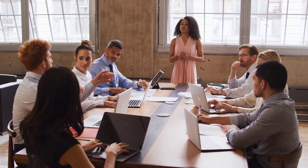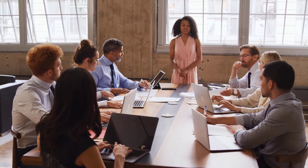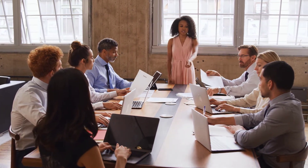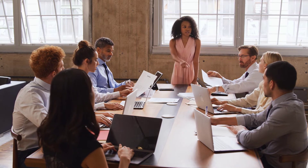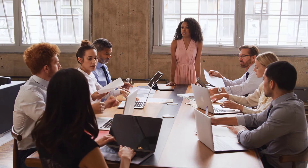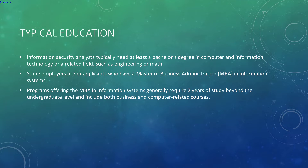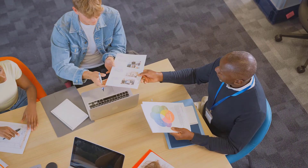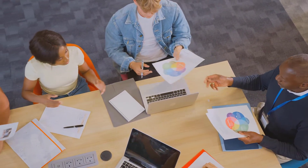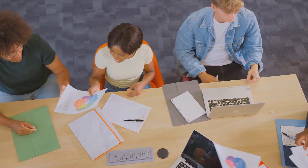How to become an information security analyst. Most information security analyst positions require a bachelor's degree in a computer-related field, and employers usually prefer analysts to have experience in a related occupation. Information security analysts typically need a bachelor's degree in computer and information technology or a related field such as engineering or math. Some employers prefer applicants with a Master of Business Administration in information systems, which generally requires two years of study beyond the undergraduate level and includes business and computer-related courses.